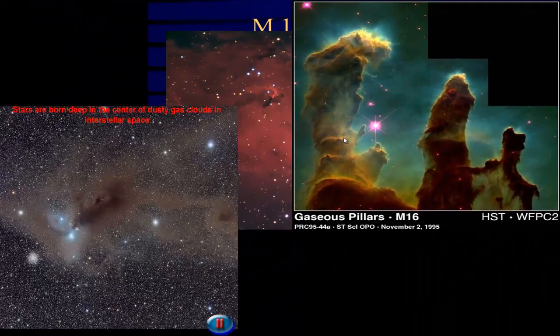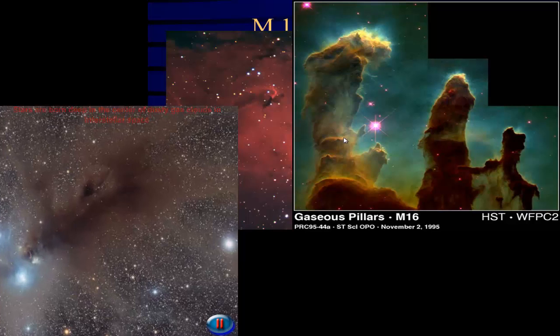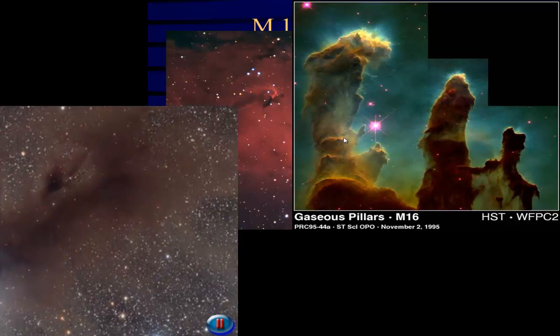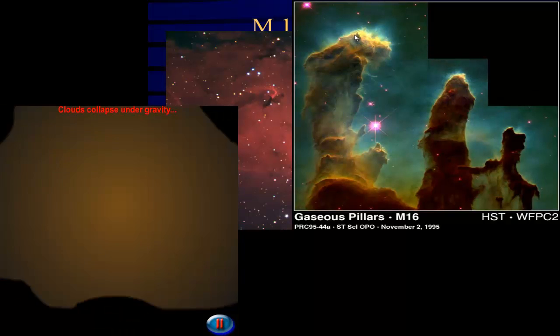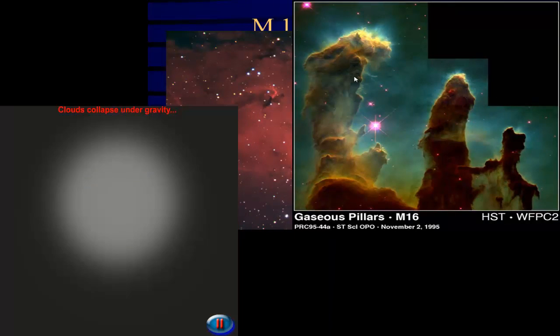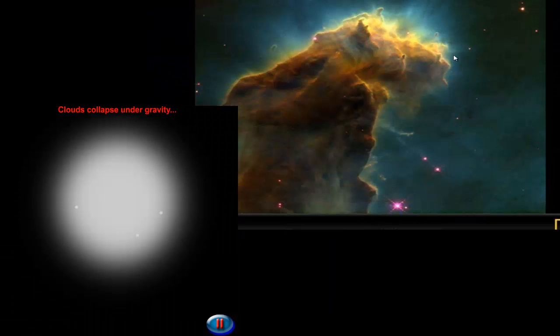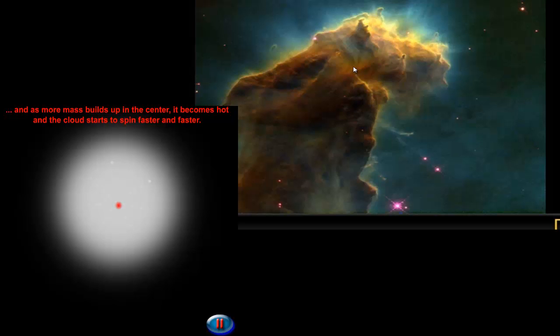But something happens and that gas and dust starts to collapse. Gravity starts to pull it closer and closer and tighter and tighter. If we look at the edge of these pillars, here's a close-up - we can see these little spikes.